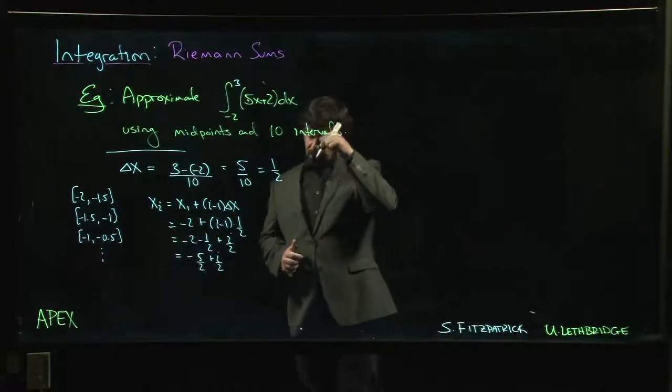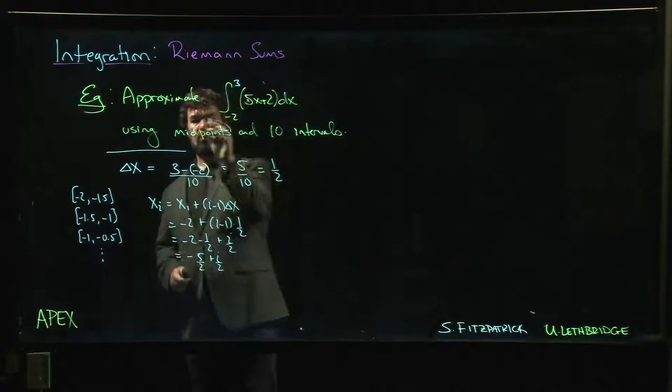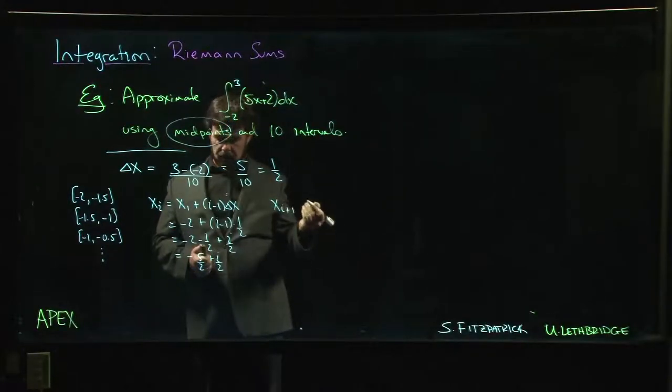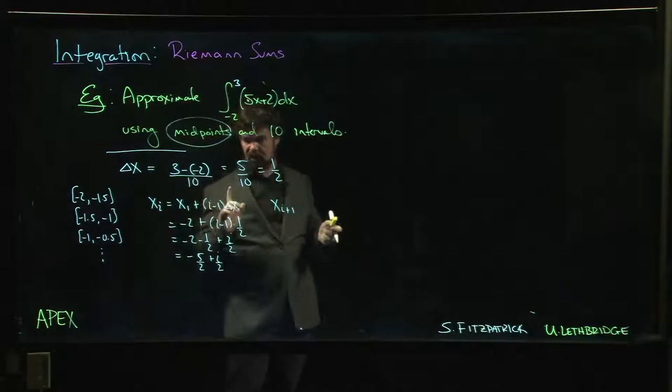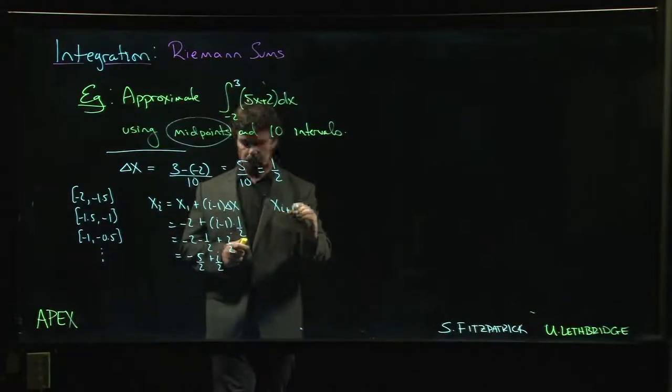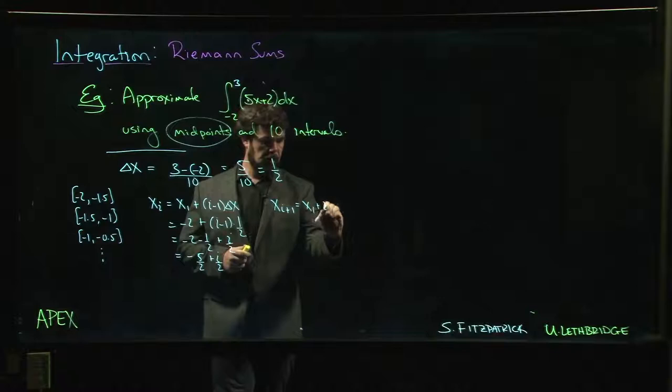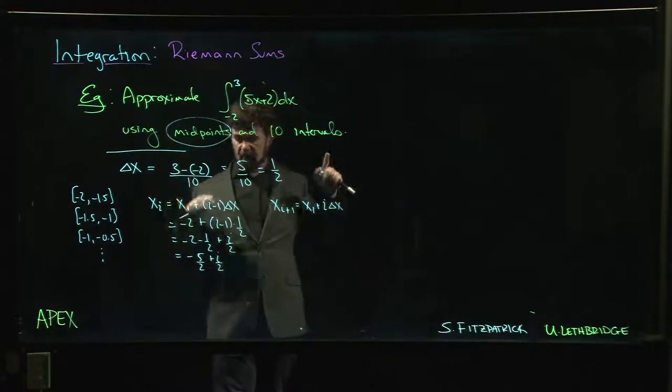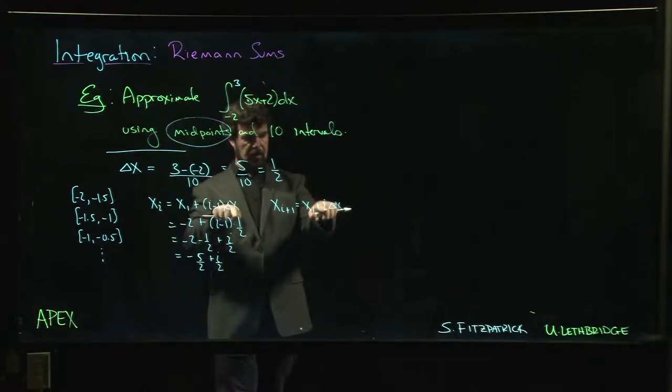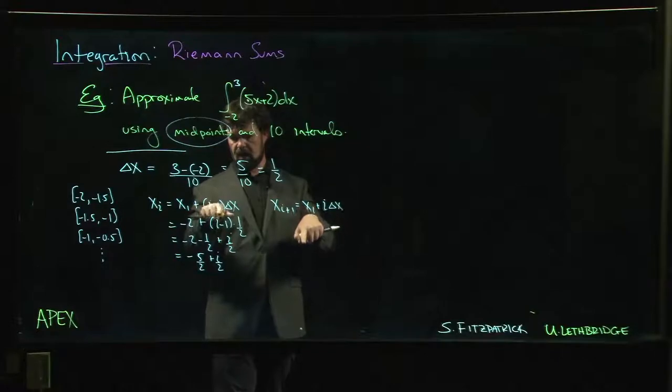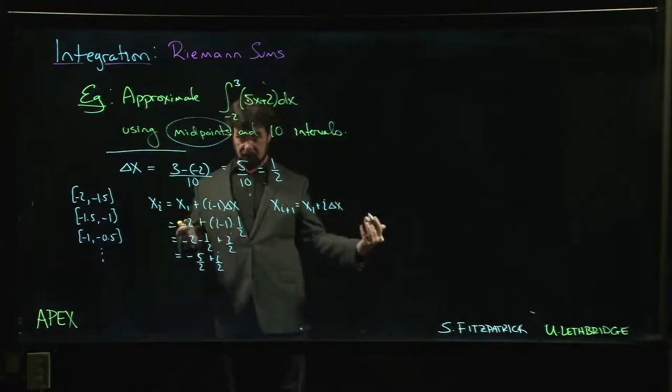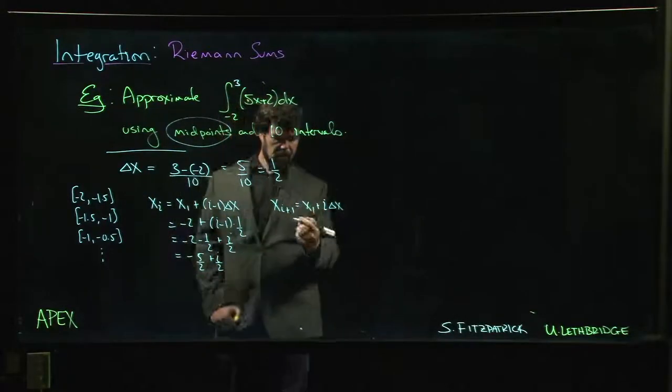Now, if we want to do midpoints, we need the next one because we want to go halfway in between. Now, you might guess, and you can do this if you want, that we know that x_{i+1} is x_1 plus i times delta x. And you can, if you want, right away say, well, you know what? Halfway between these, halfway between adding delta x i times and adding it i minus 1 times is adding it i minus 1 half times. So if you want to just put i minus 1 half in there and you'll get that midpoint straight away, you can do it like that.